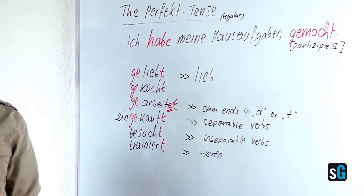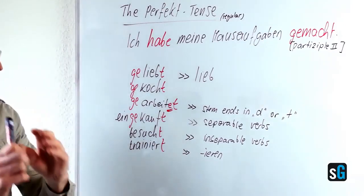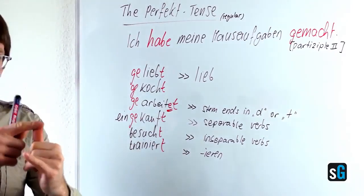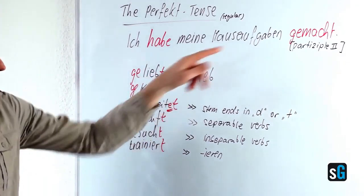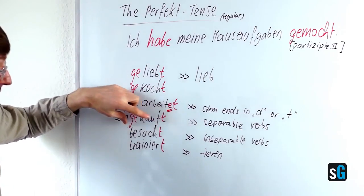Here we come to the separable verbs. The separable verbs usually separate the beginning of the verb and put it at the very end, but in the past tense it's at the very end, together,